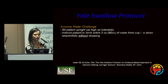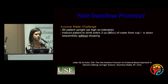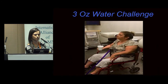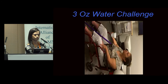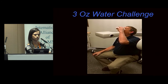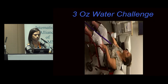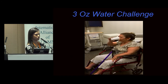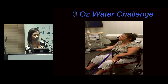The Yale Swallow Protocol was validated in five-and-a-half thousand individuals with dysphagia — not specifically ALS. The patient is given three ounces of water, asked to sit upright, and instructed to drink the entire three ounces sequentially without stopping. It's a binary outcome: they pass if they complete this without overt signs or symptoms of aspiration, and they fail if they're unable to complete it or throat clear or cough within a minute afterward. Here's an example of a patient passing the exam — continuously drinking the full three ounces without stopping.